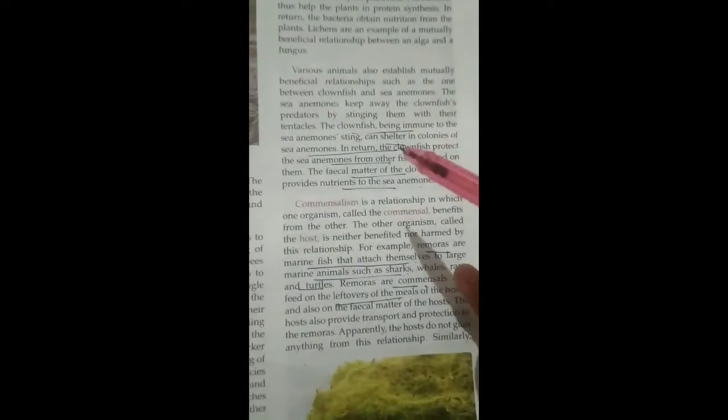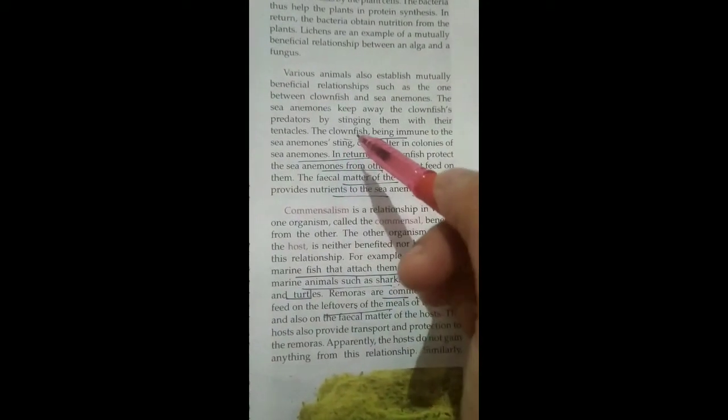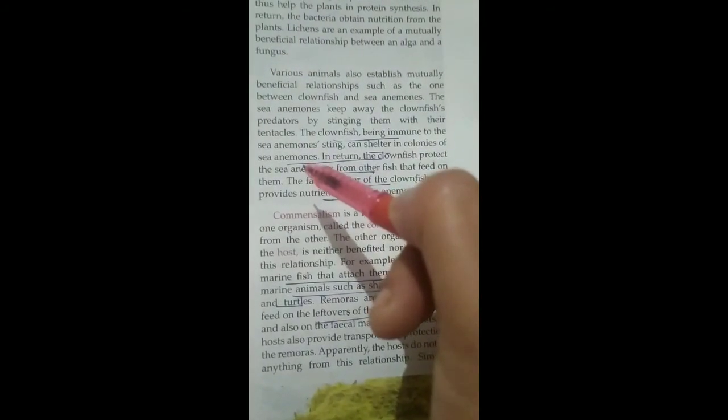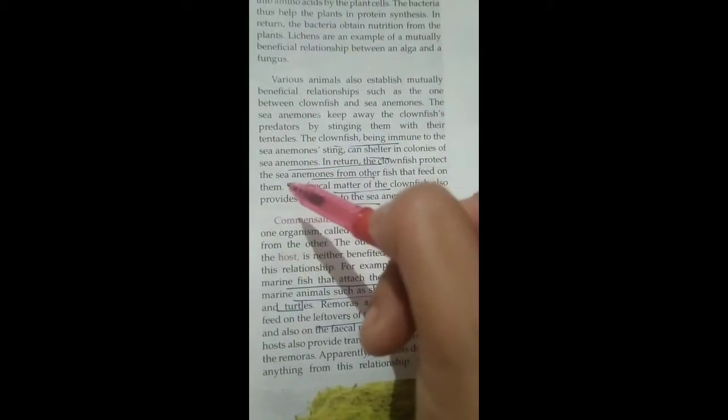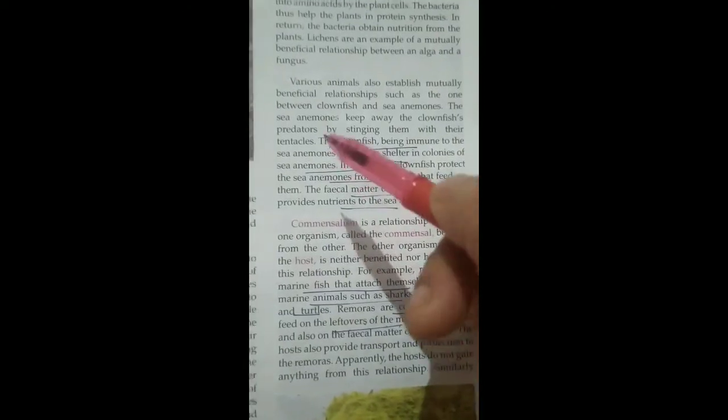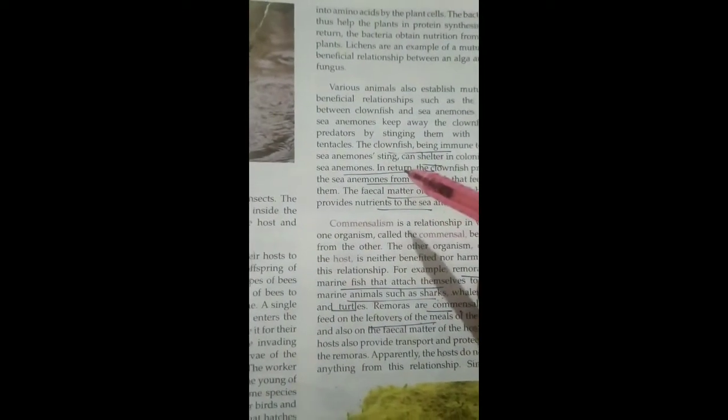Same as the clownfish and the sea anemone. Clownfish give shelter to the colonies of sea anemone, and in return, clownfish is protected by the sea anemone. So these are examples of mutualism.